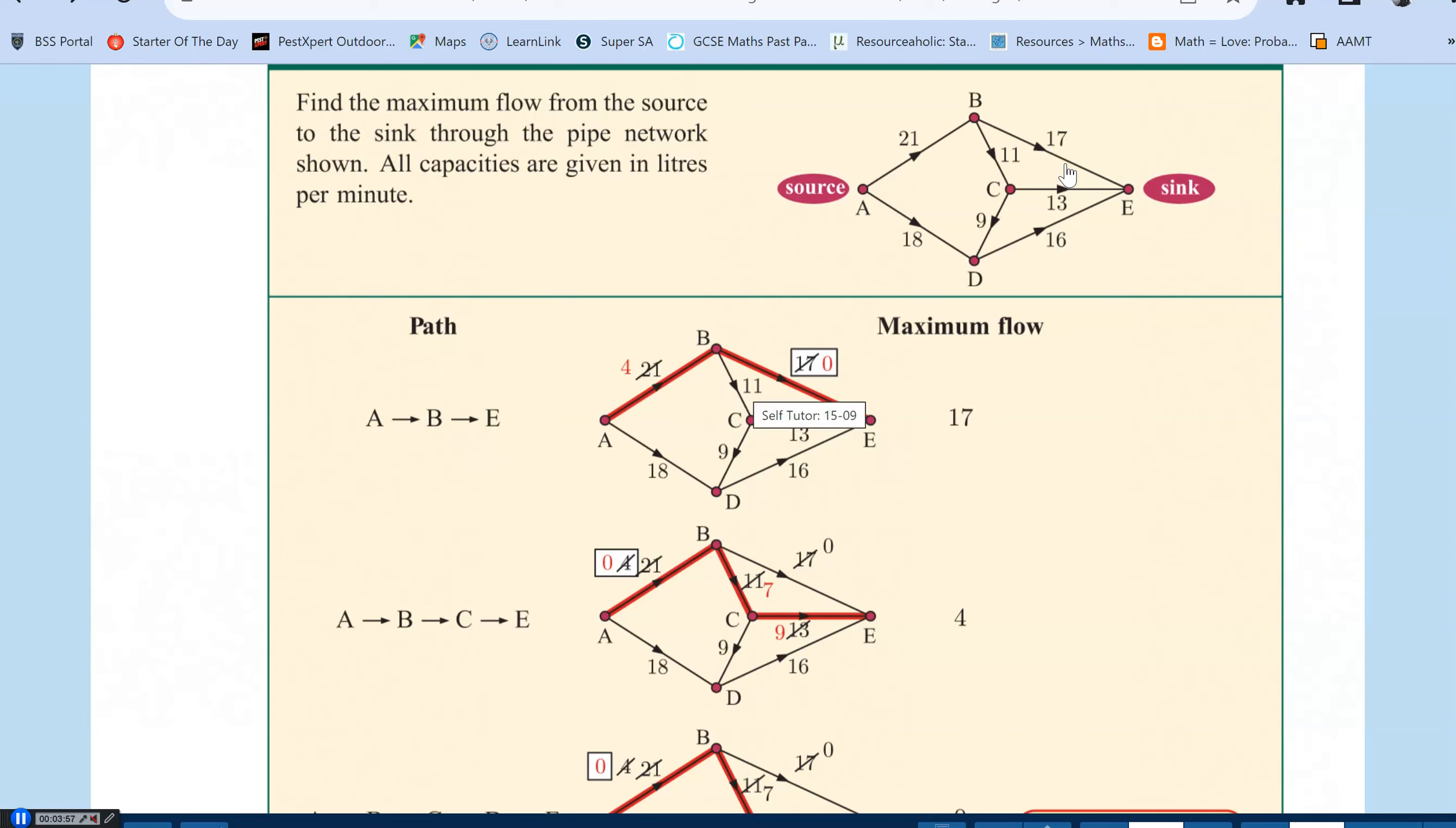So not all 21 cars are able to pass through that road, only 17. So we cross out this 21 and we say there's four of them that are still left on the road. And can those four come this way at all? Yes, they can. So that's why we're now crossing out the zero. All the four cars have gone and we could still fit another seven cars on that road.